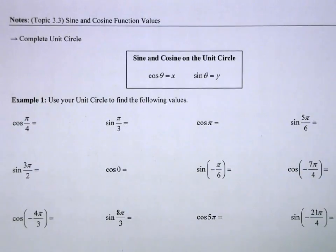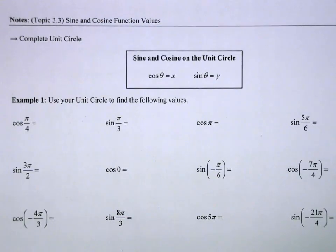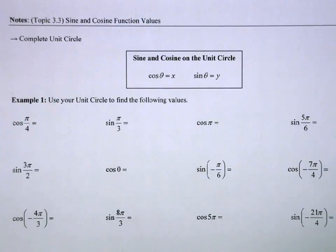Today I'm going to go over AP Precalculus topic 3.3, sine and cosine function values. We talked about radians and how we are going to use radians as our angle measure in AP Precalculus. One way to organize lots of radian values that are common and their sine and cosine values is something called the unit circle. If you have not seen a unit circle or it's been a while, I have a much more in-depth video that I want you to watch first.